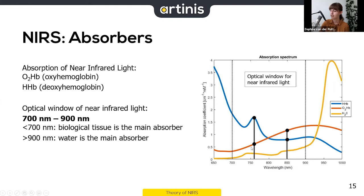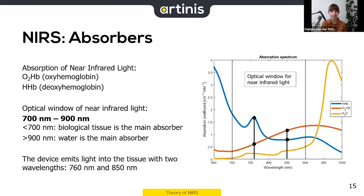Oxyhemoglobin is shown in red and deoxyhemoglobin in blue, and the black vertical lines represent the wavelengths used in our devices. We chose these particular wavelengths because they give the best resolution to disentangle the concentration change of both molecules separately.